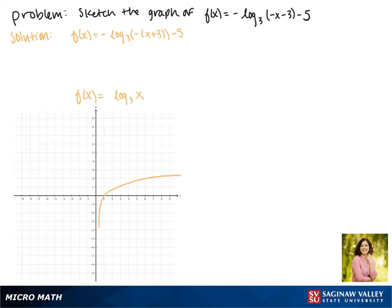Now we'll transform it to make it look like ours starting by reflections. This negative out front tells it to reflect over the x-axis. Notice that it still passes through the point 1, 0.